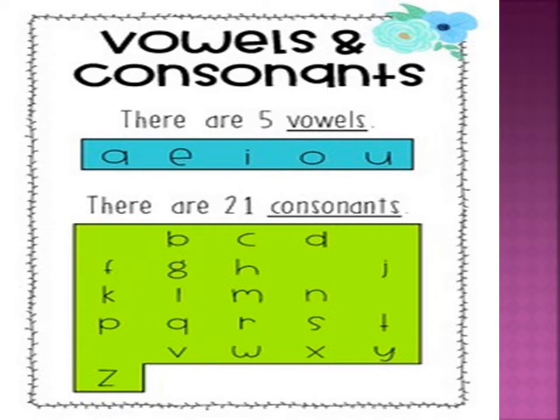Is that clear? There are 5 vowels. Vowels are written in the blue box: A, E, I, O, U. And the remaining 21 consonants are in the green box.